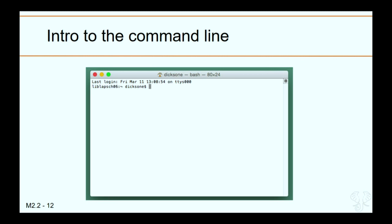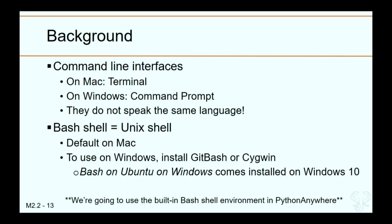The interface is usually implemented in what we call a shell. On a Mac, that shell is called Terminal, which is a bash shell. On Windows, it's Command Prompt — not the same thing, as they don't speak the same language. When we talk about a bash shell, we're talking about a Unix-based shell. A Mac is a default Unix system, so when you open Terminal, you already have a bash shell. For Windows, you'll want to install Git Bash or Cygwin. Windows 10 does come installed with a bash shell, but anything earlier than that, you'll have to install another program.